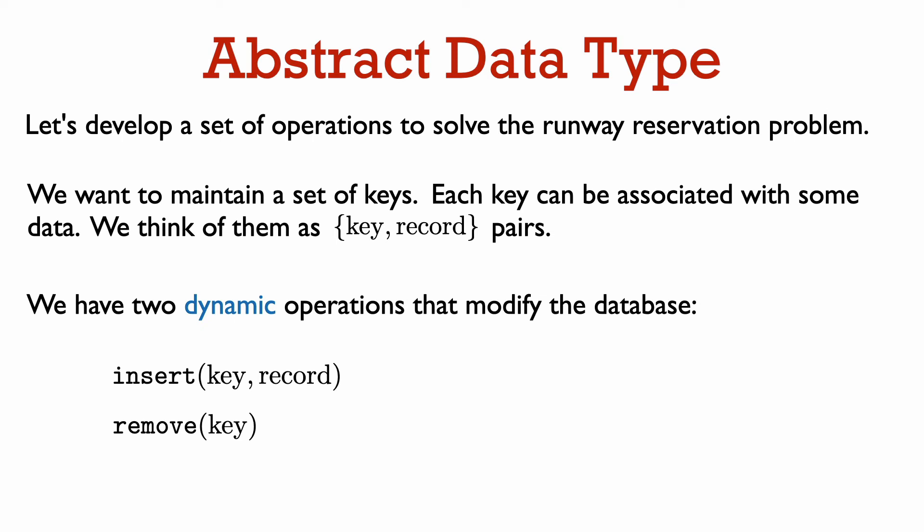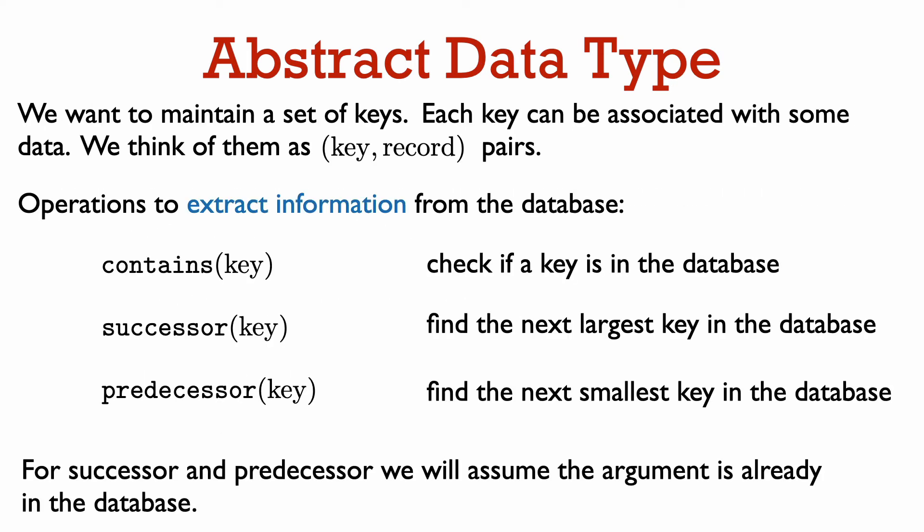We want to support two operations that change the content of our database. We can insert a new key and its associated record and we can remove an element with a given key. We also want to support operations to extract information from the database. This will allow us to check the constraint if there is already a landing time in the database that is too near a requested landing time. The contains function checks if a key is already in the database. The successor function, given a key t, finds the minimum key in the database that is larger than t. Likewise, the predecessor function, given a key t, finds the maximum key in the database that is smaller than t. For both the predecessor and the successor functions, we assume that the key argument is already present in the database. This, of course, can be checked with the contains function.